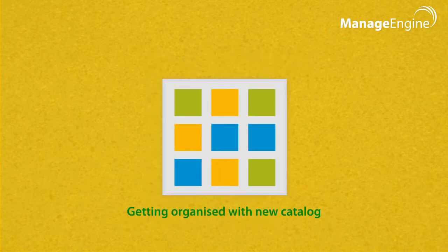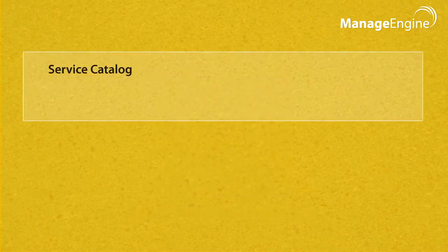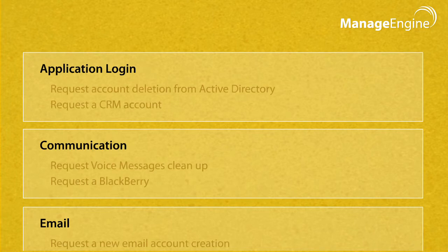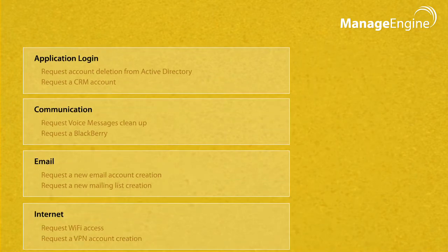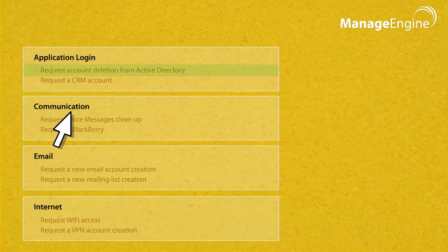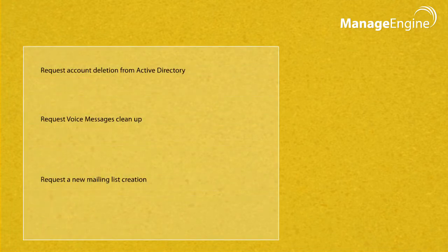Getting organized with the new catalog — inside the catalog, the menu items are organized as service categories and services, helping the users get a single view of all of the available items. This simplifies the selection of services from the available list.